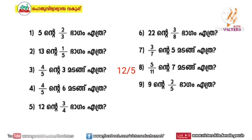12 divided by 5. That's the answer. 5 x 4, 6 x 4. 24 divided by 5 x 4. This answer is 6 x 4. 9 x 4 = 36 divided by 4.